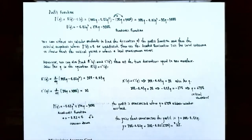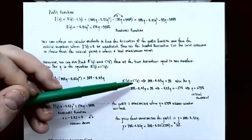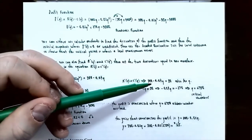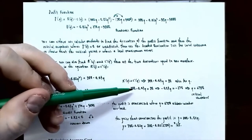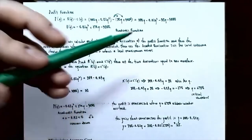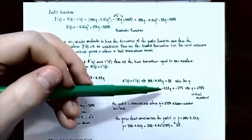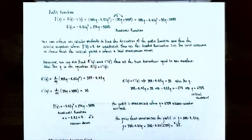Setting marginal revenue equal to marginal cost: R′(q) = C′(q), so 300 − 0.04q = 30. Subtracting 300 from both sides: −0.04q = −270. Dividing both sides by −0.04: q = 6,750. That's the only critical number.